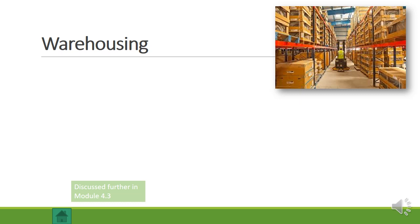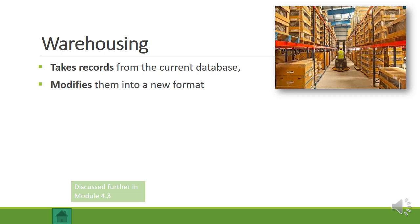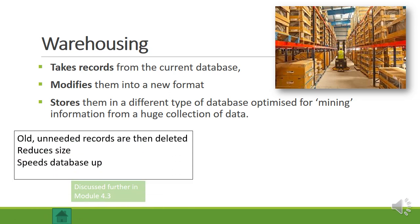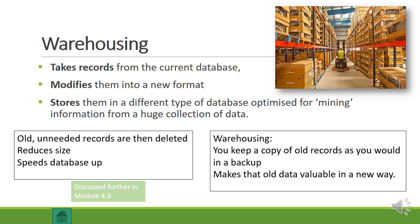A better option is warehousing. If you imagine traditional warehousing as storing crates of products in a big warehouse, the idea with data warehousing is the same — you store tons of data in a secure location. We take records from the current database, modify them into a new format, and store them in a different type of database optimized for mining information from a huge collection of data. The old, unneeded records are then deleted, which reduces the size of the old database and speeds it up. Warehousing also keeps a copy of the old records, making that old data valuable in a brand new way.